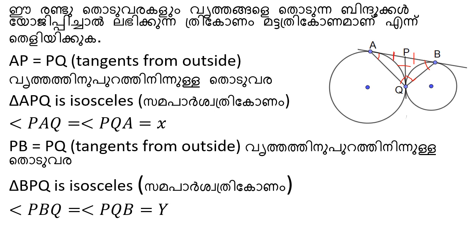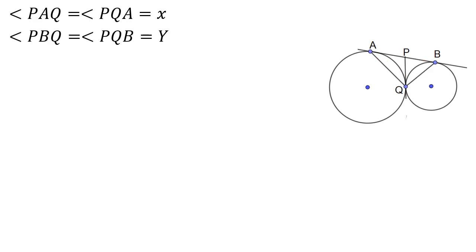If the two sides are equal, then this is the triangle. If the two points are equal, then the two corners are equal. I will call one angle x and the other angle y — here x, here y.